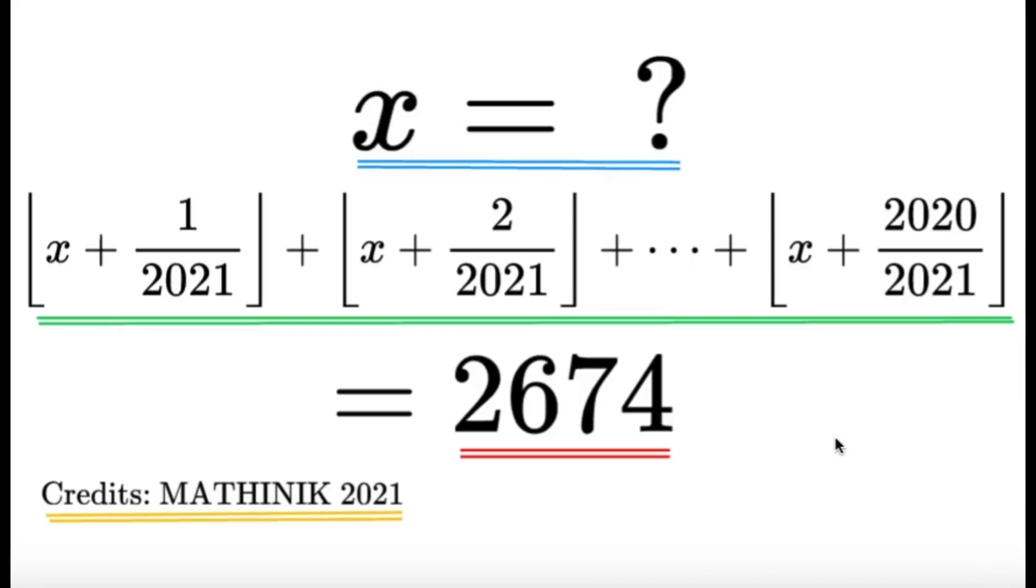Hello, hello! It's Dumplet here. Here's an item on Algebra. Find all possible values of x such that the green expression over here is equal to 2674. Now, credits to the Matinic 2021 for this item. As usual, pause this video if you'd like to give this item a try. But if you're done, let us dive into the solution.